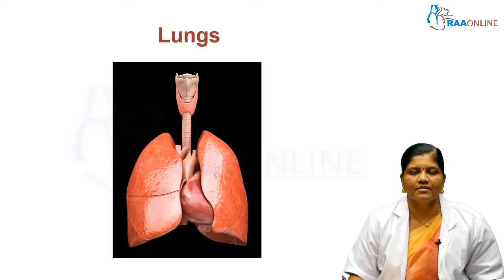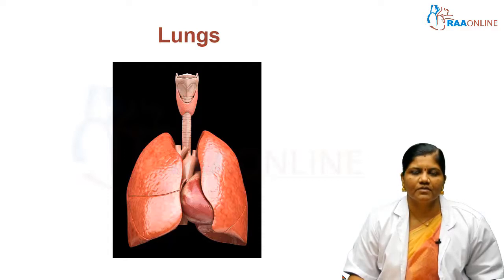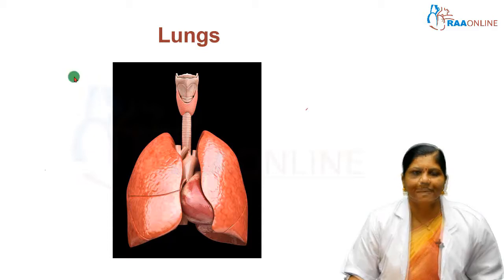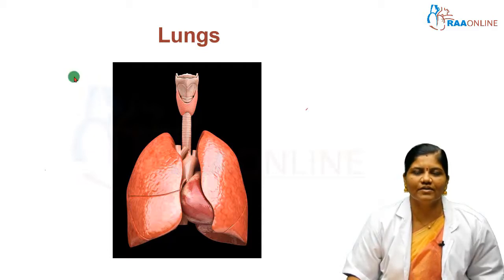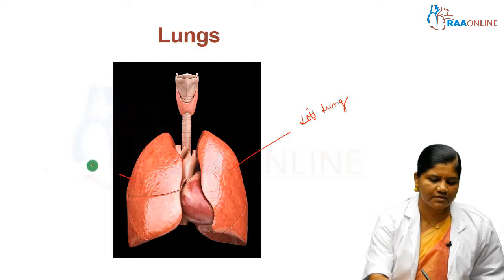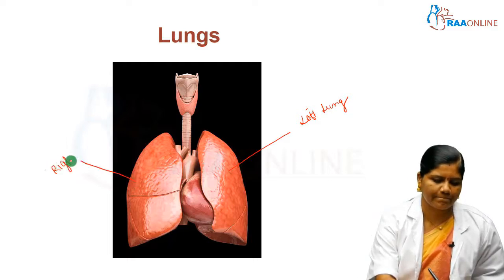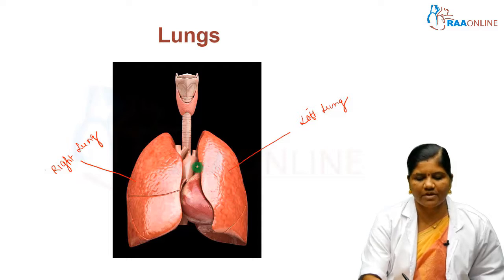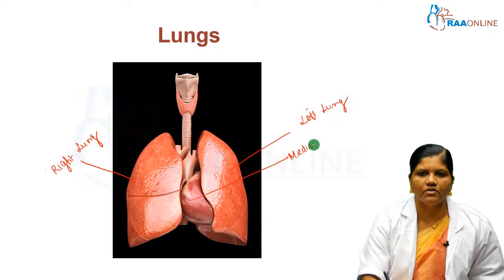The lungs are a pair of respiratory organs located within the thoracic cavity on either side, covered by a pleura. This is the left lung and this is the right lung. Both lungs are separated by the mediastinum, which is occupied by the heart and great vessels.